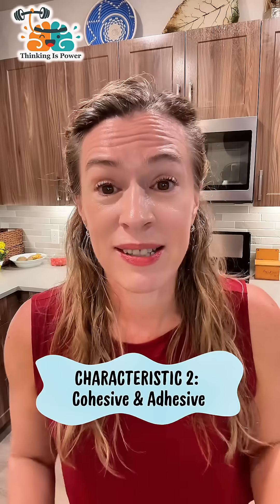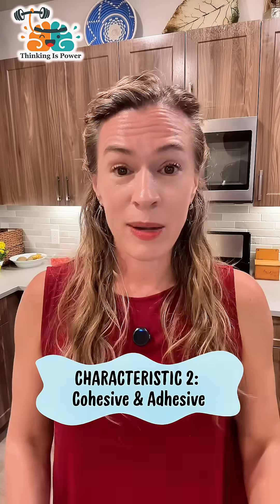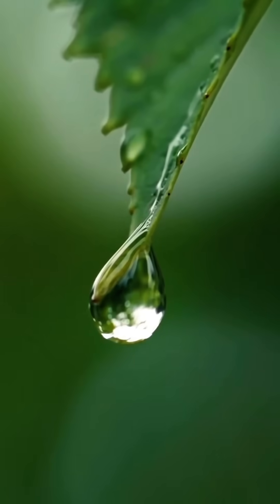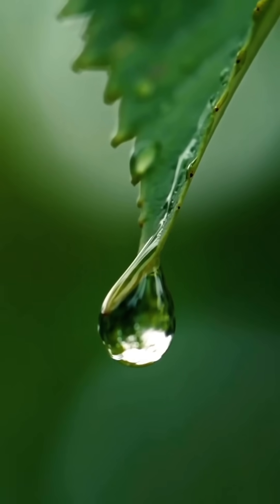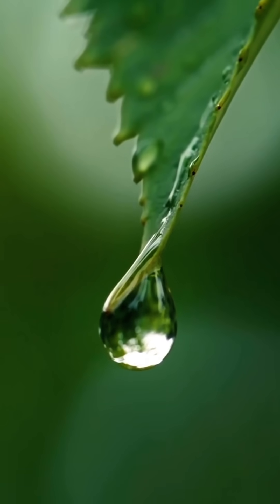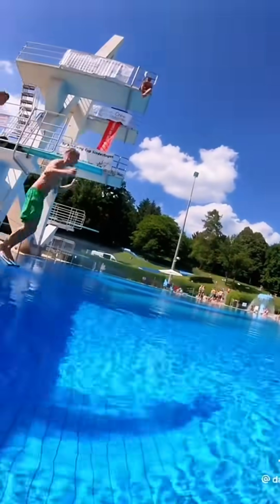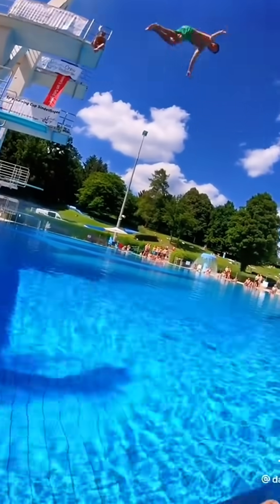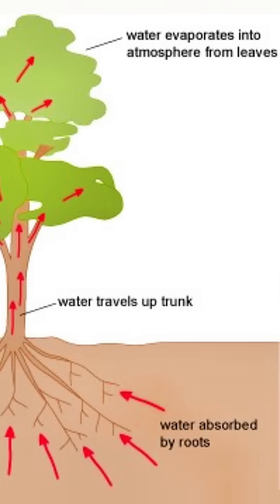Water sticks to nearly everything because its poles are attracted to other charges. Cohesion is water sticking to itself, creating things like surface tension, which you might be aware of if you've ever belly flopped. Adhesion is water sticking to other surfaces — in case you've always wondered, this is how water moves against gravity up a plant.